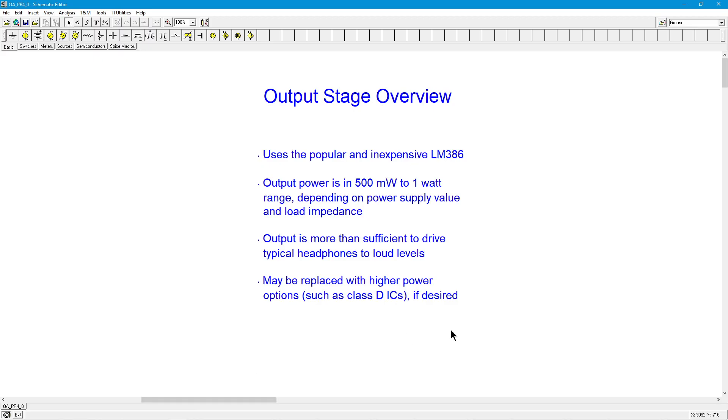First of all, this uses the LM386. This was originally put out by National Semiconductor, eventually absorbed by Texas Instruments, so you could still get it from TI. This is a nice little power op amp designed specifically for things like table radios and little items that didn't need a ton of power. We're basically talking, depending on the power supply you're going to use and the load impedance, maybe half a watt to a watt.